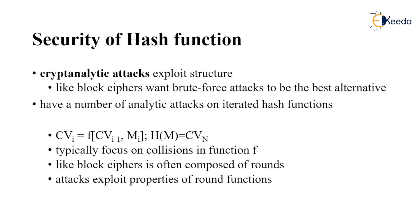Similarly for hash functions, cryptanalysis exploits the structure like block ciphers. Hash functions also face analytic attacks because their implementation depends on iterations — they operate in iteration-based modes. The equation CV_i = f(M_i, CV_{i-1}) describes this: for each block M_i, the function is applied with the previous chaining value, until the complete message length is covered and the full hash output is produced.